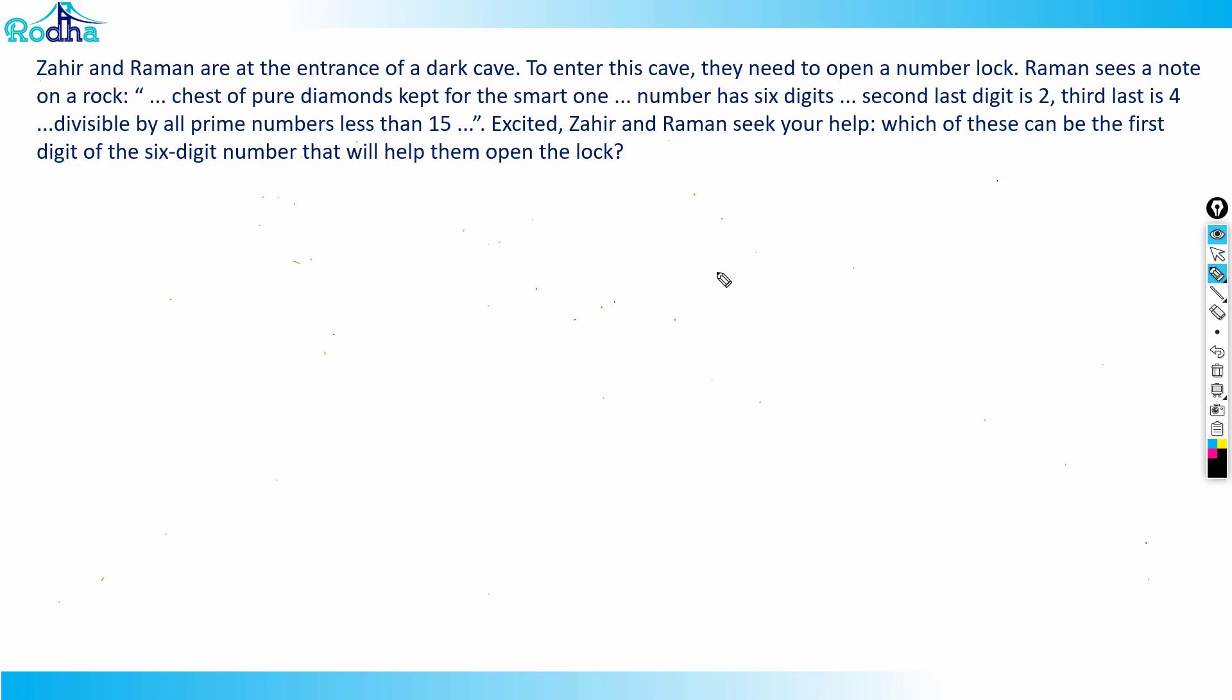Number has six digits. The second largest digit is 2, third last is 4, divisible by all prime numbers less than 15. Excited, Zahir and Raman seek your help. Which of these can be the first digit of the secret number that will help them open the lock? There will be basically multiple options there. Let's solve this question.